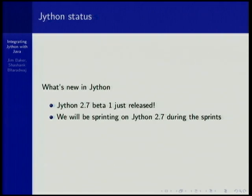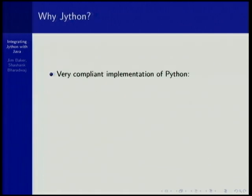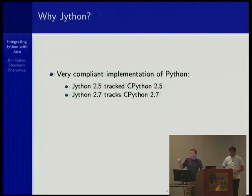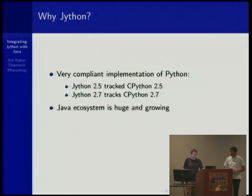We'll be sprinting on Jython 2.7 for that final release during the sprints, so please join us if you're interested. Why Jython? A lot of you have mentioned that you've used it in the past. Jython 2.7 tracks CPython 2.7 — that's the logic of our versioning scheme. In general, why Jython?